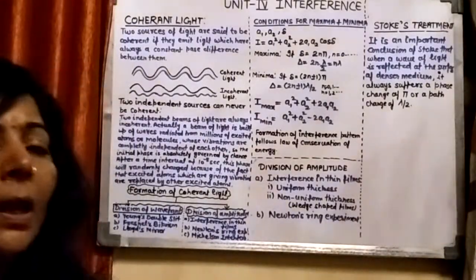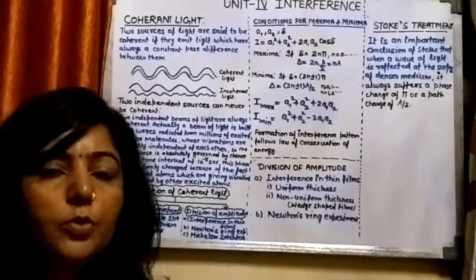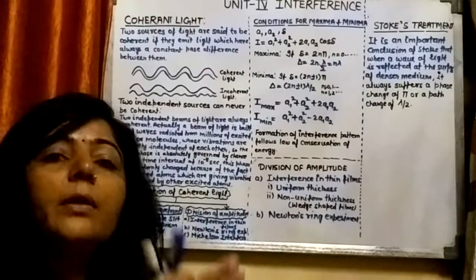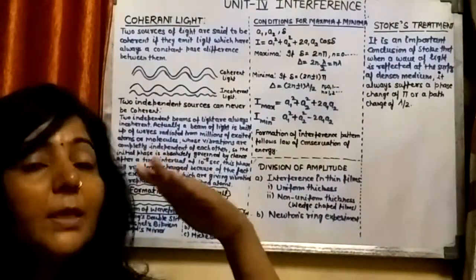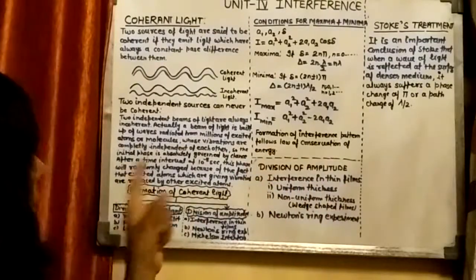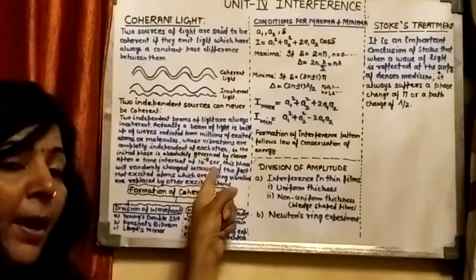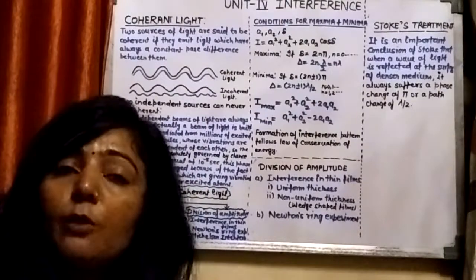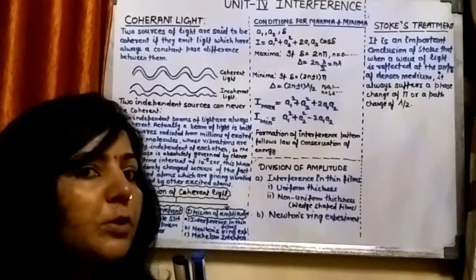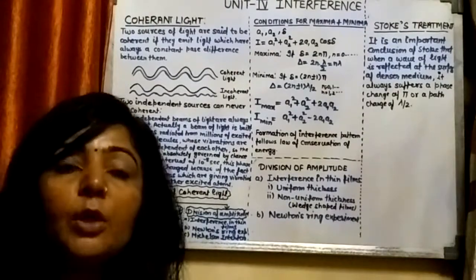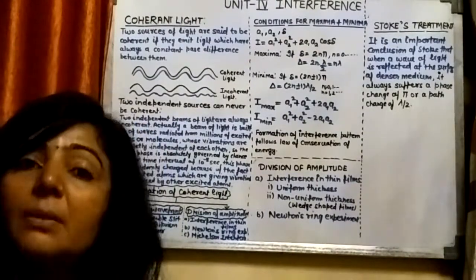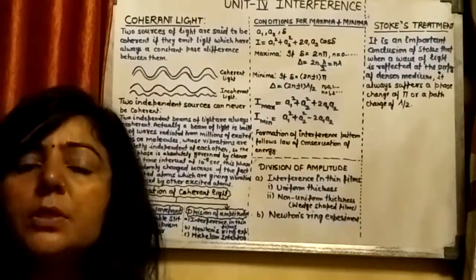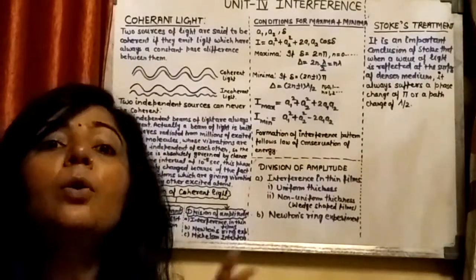The reason is simple. In every light source, you get light when the atoms in an excited state come down and emit their extra energy in the form of photons. Atoms in the excited state can stay there only for 10 to the power minus 8 seconds. The problem is that the initial phase of each independent source is totally independent of the initial phase of the other source. So if there is a change in the phase of one source, you cannot maintain a similar change for the other source. This means even two similar independent sources can never emit coherent light.